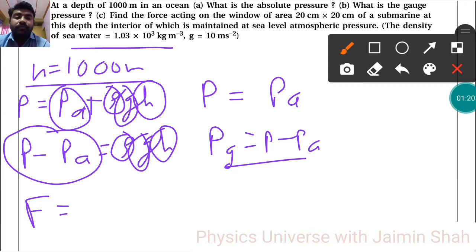So force is equal to pressure into area. Now which pressure? Gauge pressure. What is the area? 20 into 20. So 400, but centimeter square. Remember centimeter square into meter square is 10 raised to minus 4 meter square.